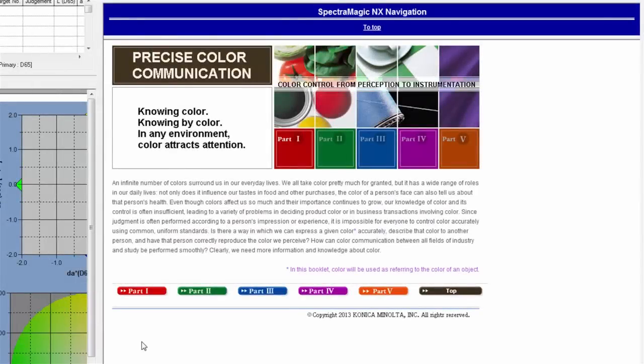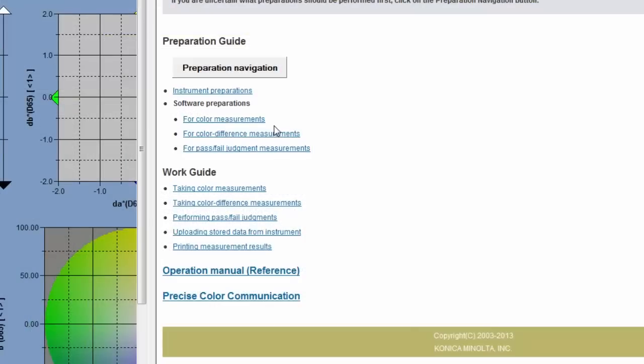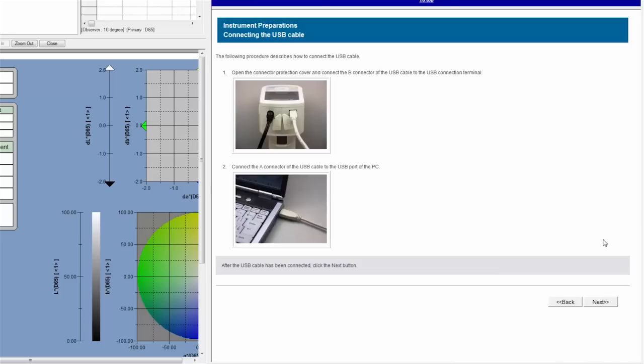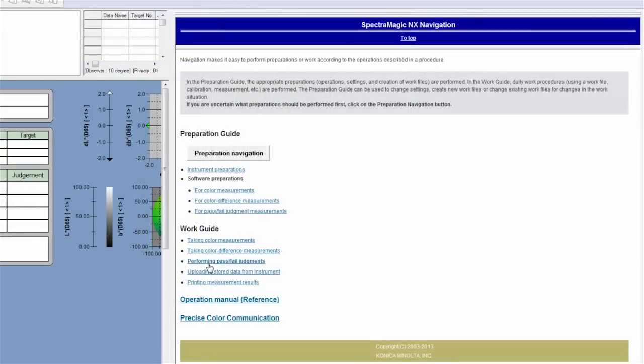SpectraMagic NX is easy to use and includes a step-by-step navigation option within the software. You can even customize this unique feature to match your individual measurement processes.